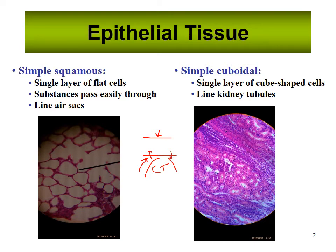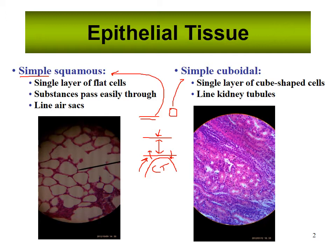When naming epithelial tissue, it's either simple or stratified based on how many cell layers exist between the free surface and the basement membrane. If there is only one layer it is simple; if there's more than one it is stratified. If the cell itself is flattened it is squamous. If it is roughly as wide as it is tall, cube-like, it is cuboidal. If the cells are taller than they are wide, they are columnar.